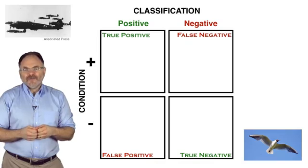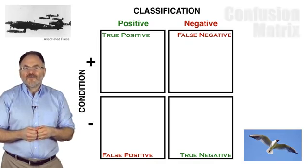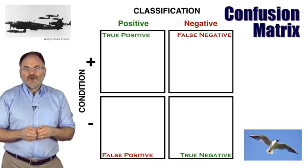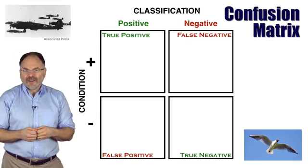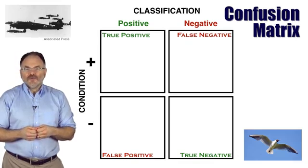This entire arrangement of eight values is known as a confusion matrix. It will come up again and again throughout this course and throughout your work in data science, so it is worthwhile to familiarize yourself with it completely.